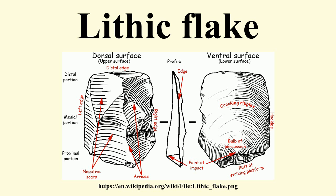The end which received the blow or pressure is referred to as the proximal end of the flake. The terminal end is referred to as the distal end. The side displaying the bulb of force but without flake scars is called the ventral surface, while the opposite side, displaying the flake scars of previous removals or the cortical or original rock surface, is the dorsal surface.